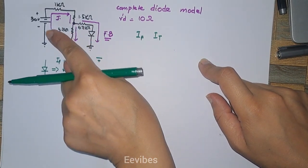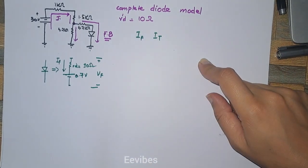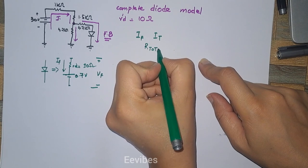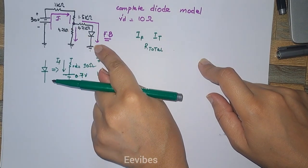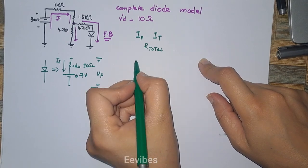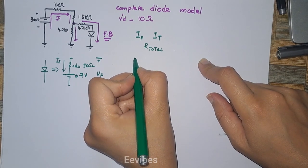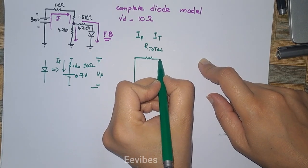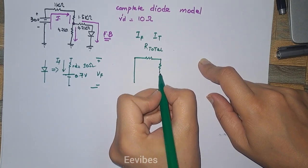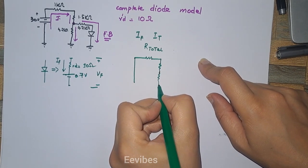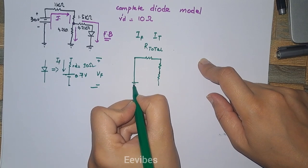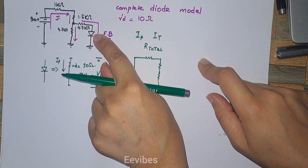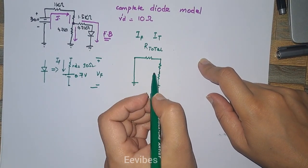To determine the total current of this circuitry, we need the total resistance of this particular circuit. To draw the total circuit, we replace the voltage sources with short circuits. Then we have resistors in the network — at this point there was another resistor that is grounded, and since the diode equivalent model replaces the diode, we handle it accordingly.